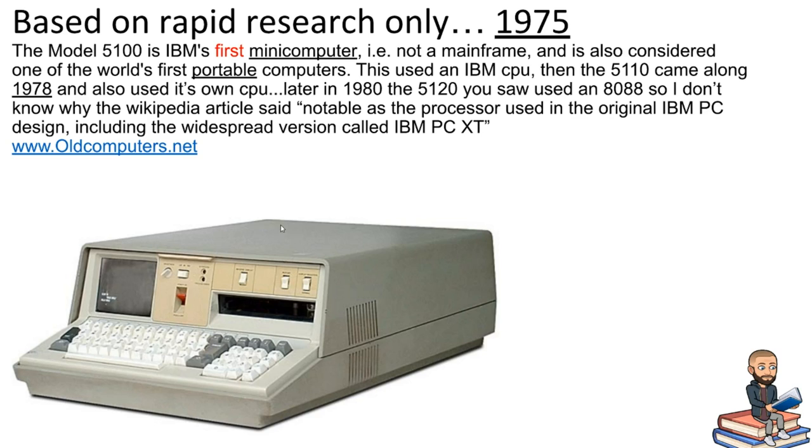I did some extra rapid research just because I knew computers had these cassette tapes in them. We're talking 1975 now. The Model 5100 is IBM's first mini-computer. So it's not a mainframe. That's the difference between a mini-computer and a mainframe. Nowadays, I think we just call them desktops. Maybe back then, they just wanted to emphasize the fact that a mini-computer is smaller than this gigantic box, almost size of a room computer. But this thing right here is considered the world's first portable computers. And this one was using an IBM CPU.